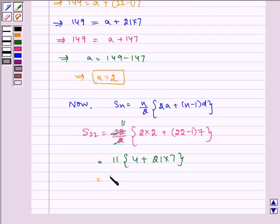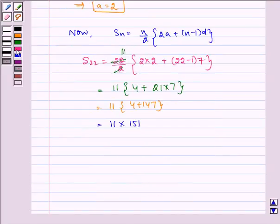Which equals 11 multiplied by (4 plus 147), which equals 11 multiplied by 151, which equals 1661.